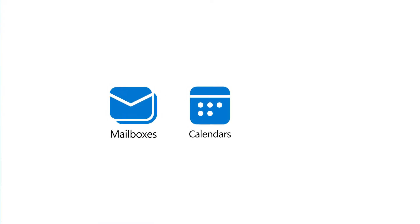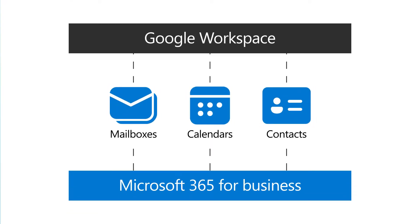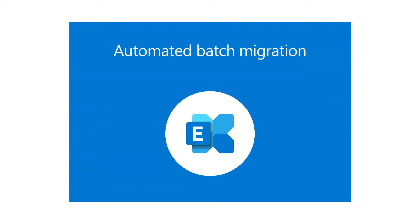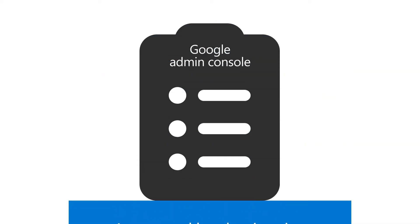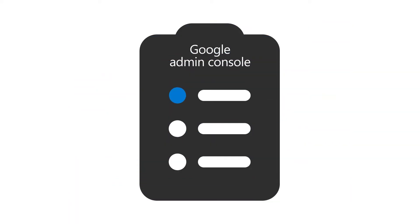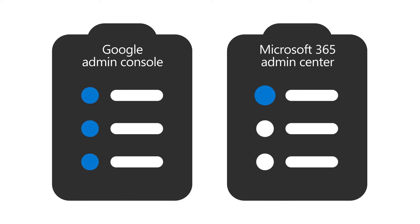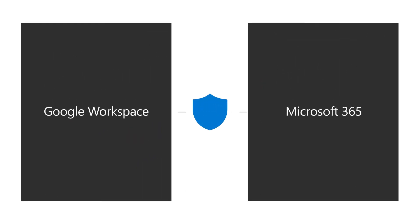You can migrate your users' mailboxes, calendars, and contacts from Google Workspace to Microsoft 365 for Business. This can be done through an automated batch migration in the Exchange Admin Center. Before you start your migration, you must complete several tasks in the Google Admin Console and the Microsoft 365 Admin Center so that data can be moved securely without loss.